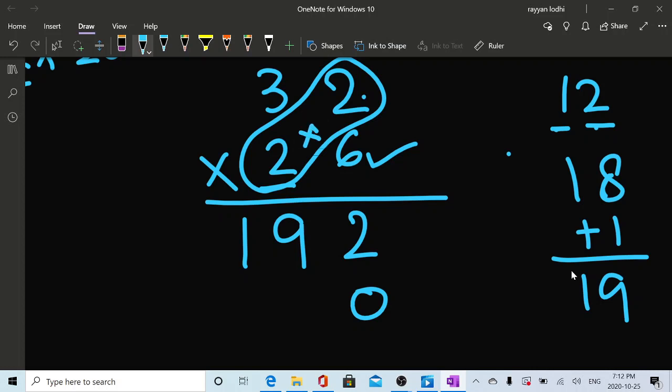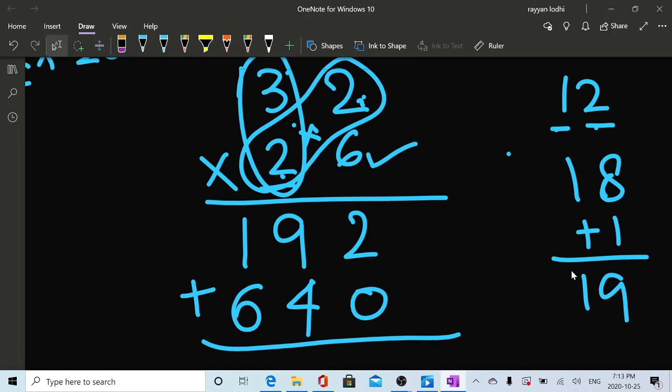So two times two is four, which comes directly underneath nine, which is going to be our first number. And then this two is going to get multiplied by this three. So two times three is six. So that six just simply comes here. And then you just simply add them.